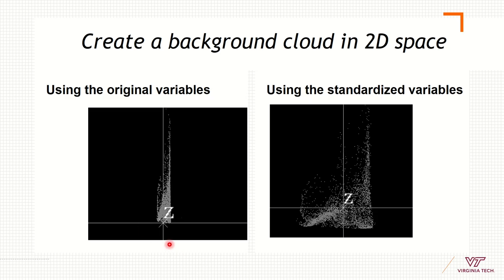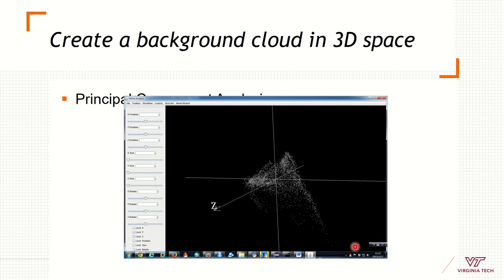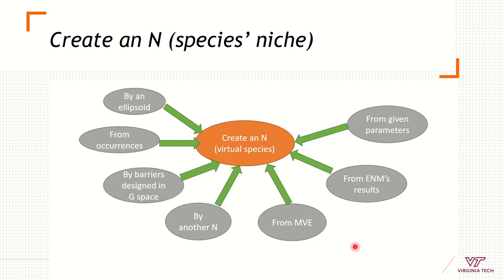The use of original variables can sometimes show clusters when variables are correlated, so you may need variable standardization or normalization for a better display of the background. This shows a three-dimensional background. You can also develop a niche model based on physiological parameters of tolerances to different variables like temperature or precipitation, or based on outputs from other ecological niche modeling algorithms like Maxent or GARP, or using convex polyhedrons or minimum volume ellipsoids from occurrence data.